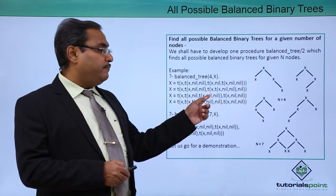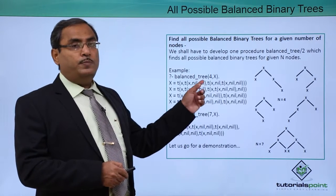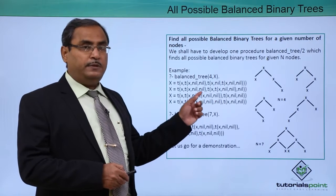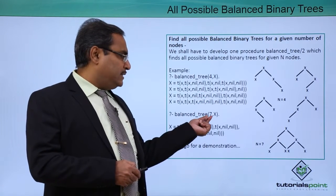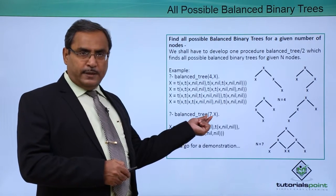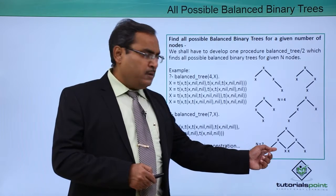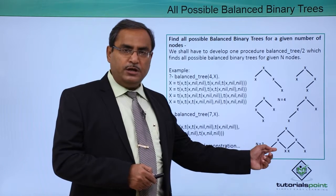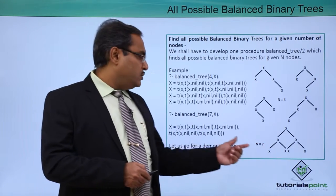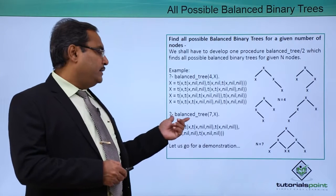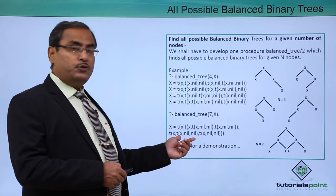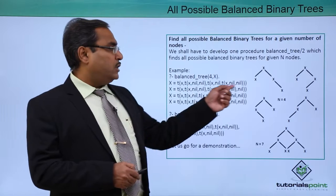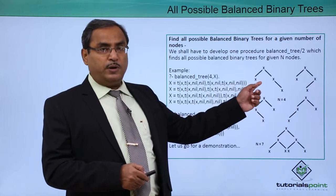Those balanced binary trees will be the output of this respective goal. If we pass 7, then there is only one possible balanced binary tree with the value of 7. That output is corresponding to this one.